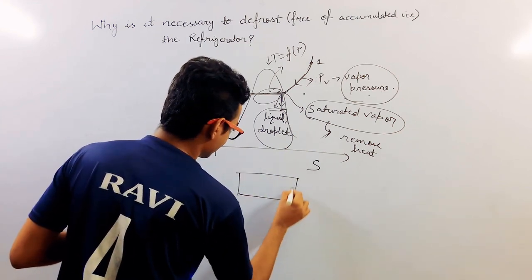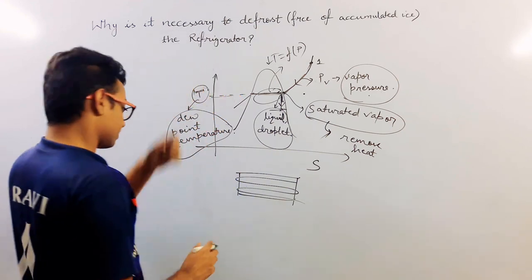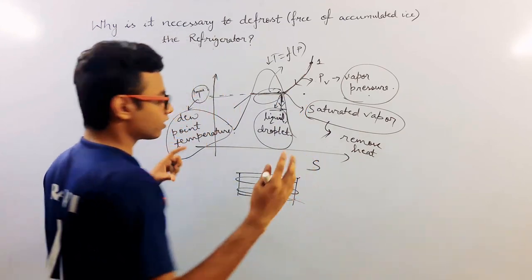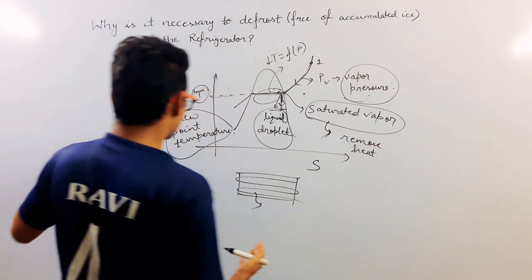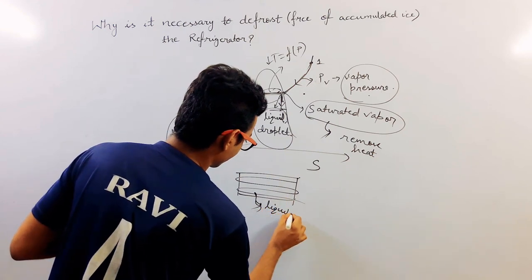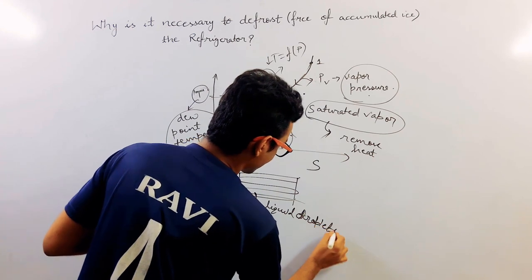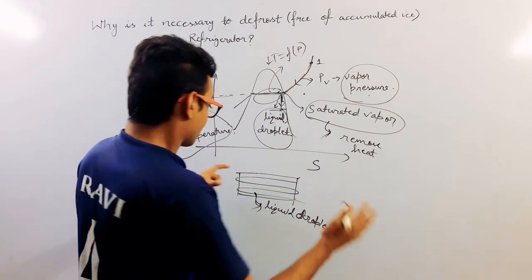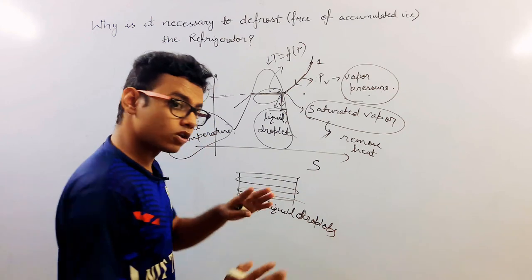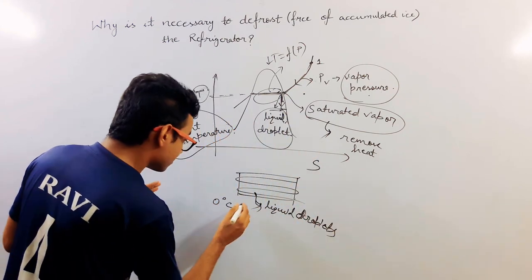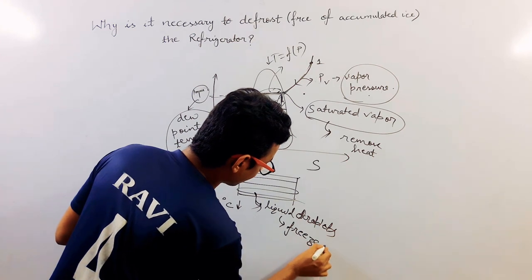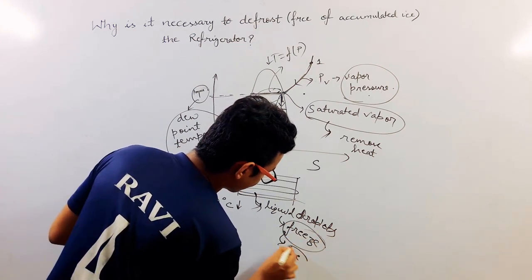Suppose this is the evaporator of refrigerator, and the temperature of this evaporator is below the dew point temperature. Because at dew point temperature, the condensation just begins, but no liquid droplet is formed. So just below the dew point temperature, or substantially below the dew point temperature, liquid droplets will form. And if the temperature is also below the freezing point of water, that is below zero degree Celsius, then this liquid droplet will freeze or it will convert into ice. And this is what is known as frost.